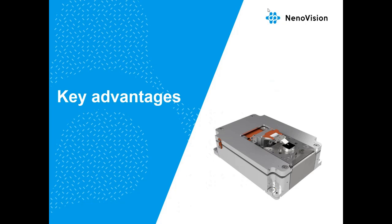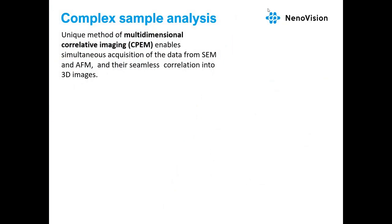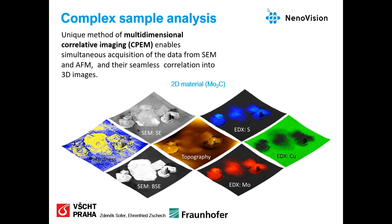Thanks to AFM and the CPAM technology, we are able to analyze the sample in a very complex way. We can measure surface topography simultaneously inside the SEM with secondary electrons and backscattered electrons. AFM also enables other techniques — for instance, you can measure hardness, or use an EDS detector to find the elemental composition of your material.